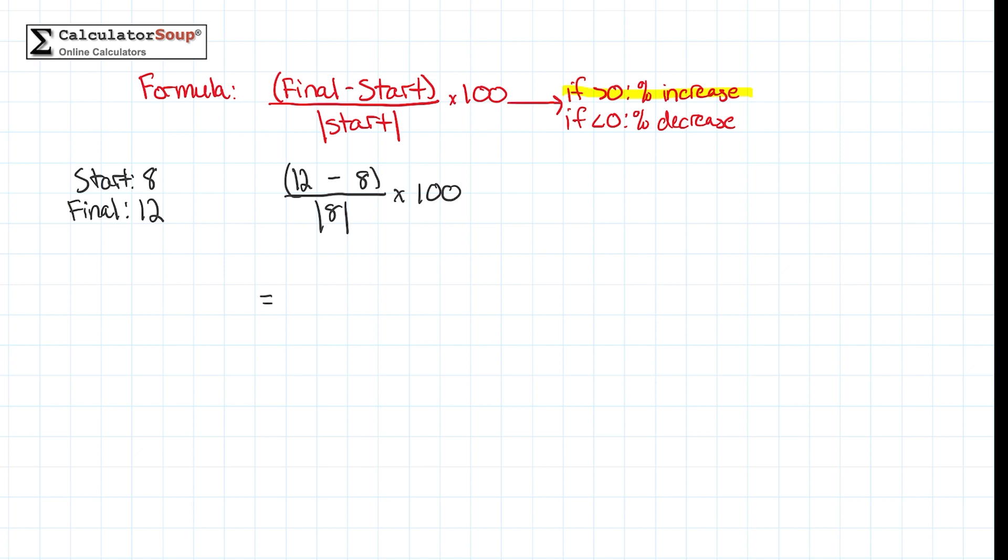Next, let's rewrite the formula after performing each step until we have our answer. First, subtract 12 minus 8 to get 4 and that goes over the absolute value of 8 which is 8 times 100.